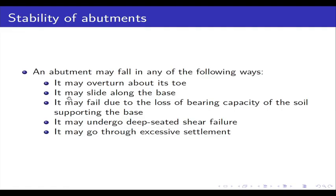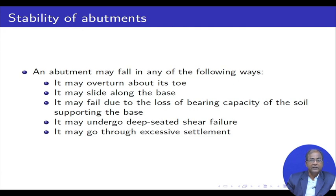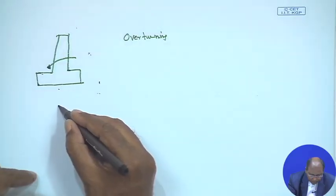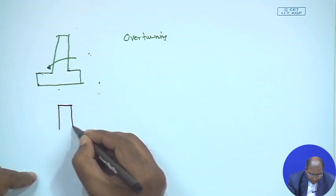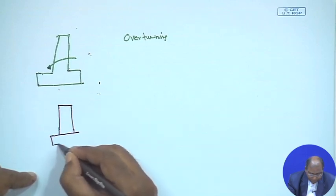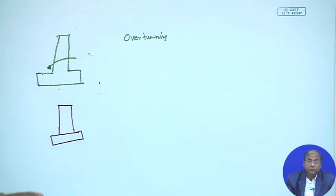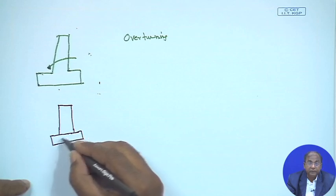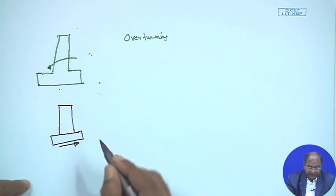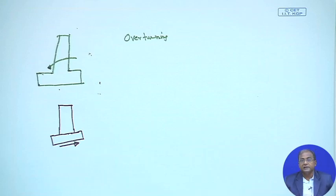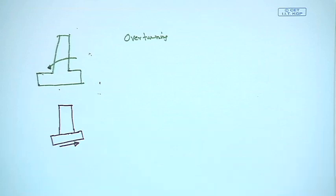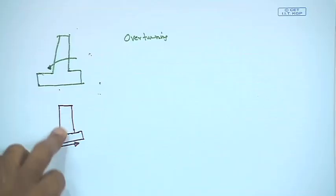Not only do you have to consider the design point of view, but also the rigid body point of view — whether the earth pressure or other loads will overturn it and cause it to fall. Another case is sliding along the base. There is a certain restriction to consider for sliding so that the structure does not actually move. You have to check whether the horizontal force and the vertical one are within limits.